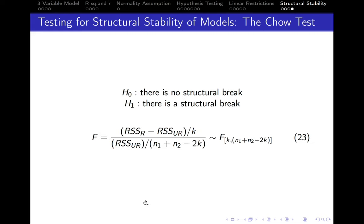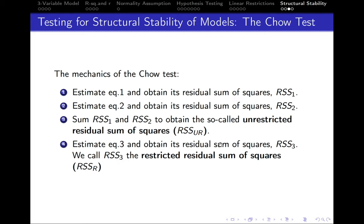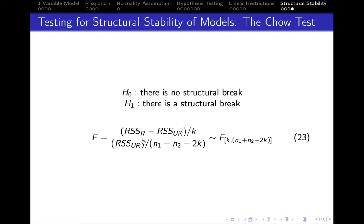To test this hypothesis we use the F test. We take RSS_R minus RSS_UR and divide it by k, which is the number of parameters. If we look at our example, we will see that there are two parameters: the intercept and the slope coefficient.